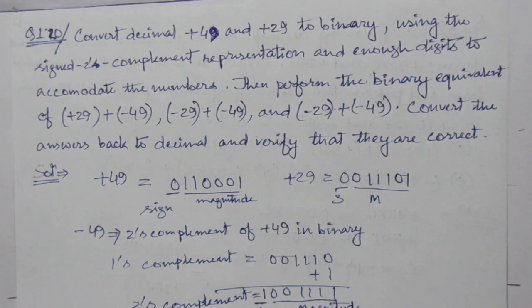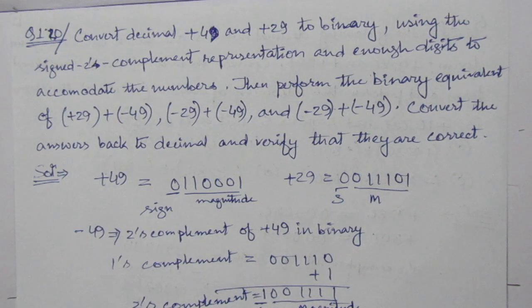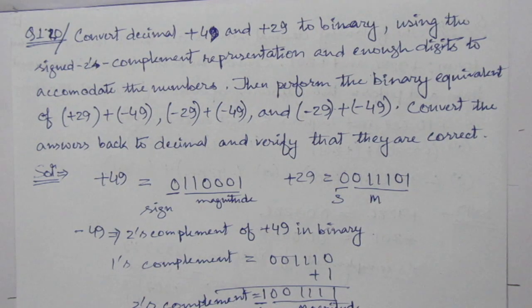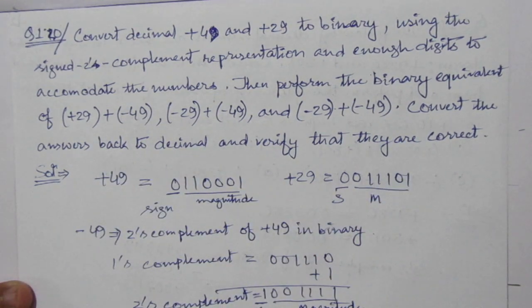The problem is: convert the decimal numbers +49 and +29 to binary using 2's complement representation with enough digits to accommodate the numbers, then perform the binary equivalent of the given operations. Convert the answers back to decimal and verify that they are correct.